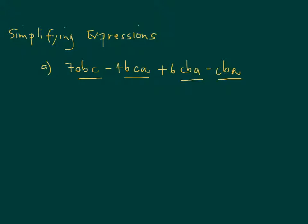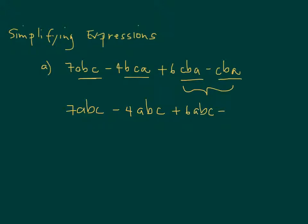Do not think that the only expressions you can combine are the last two. Yes, they're both CBA, so those two will become five CBA — six minus one. But if you recognize that all the terms are the same or similar, then you can rewrite: BCA is the same as ABC, then plus six ABC, and then minus one ABC.